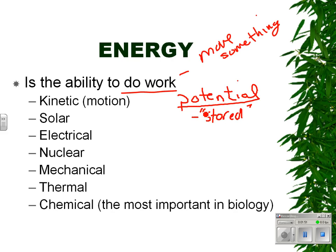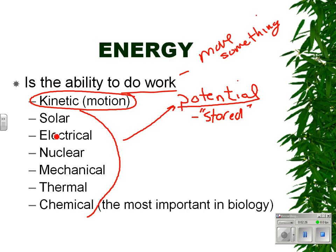Something you have to understand is that all of these are types of energy. There can be potential electrical energy — for example, the switch being off stores electrical energy. You turn the switch on and now those electrons are moving down a wire to run the lights. So there are really two major themes: kinetic energy — the energy of moving electrons, moving parts, moving air molecules — and potential energy, which is the stored energy. We'll come back to that a little bit later.